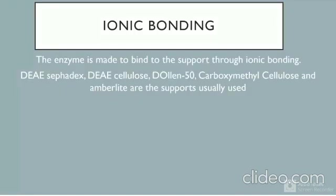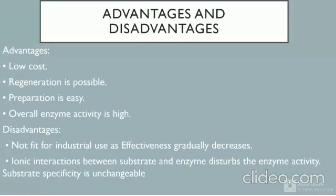Ionic bonding: the enzyme is made to bind to the support through ionic bonding. Examples of supports used include DEAE-Sephadex, DEAE-cellulose, Dowex 50, carboxymethyl cellulose, and Amberlite. Advantages: low cost, regeneration is possible, preparation is easy, and overall enzyme activity is very high. Disadvantages: unfit for industrial use as effectiveness gradually decreases, and ionic interaction between substrate and enzymes disturbs the enzyme activity.